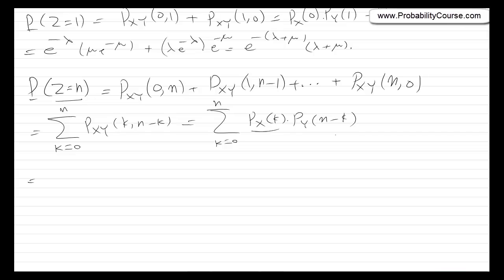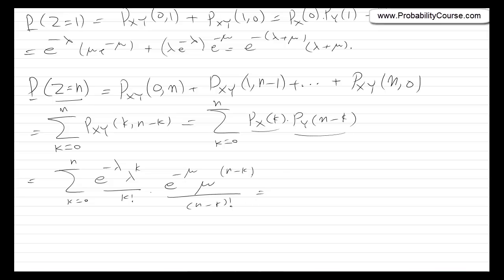We know these values because X and Y are Poisson, so this becomes the sum from k=0 to n of [e^{-λ} · λ^k / k!] · [e^{-μ} · μ^{n-k} / (n−k)!]. We can factor out e^{-(λ+μ)}, leaving the sum from k=0 to n of λ^k · μ^{n-k} / (k! · (n−k)!).